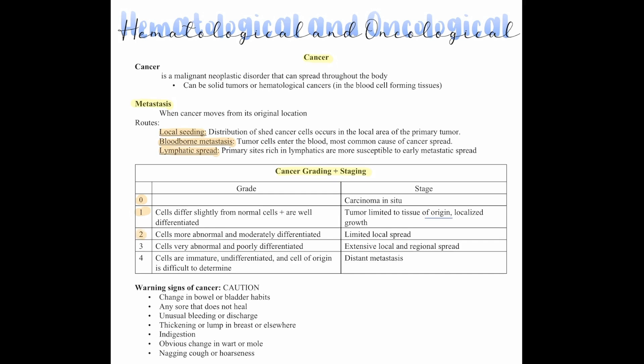Stage two: cells are abnormal and moderately differentiated, with limited local spread. Stage three: cells are very abnormal and poorly differentiated, with extensive local and regional spread. Stage four: cells are immature and undifferentiated, and cells of origin are difficult to determine, with distant metastases.